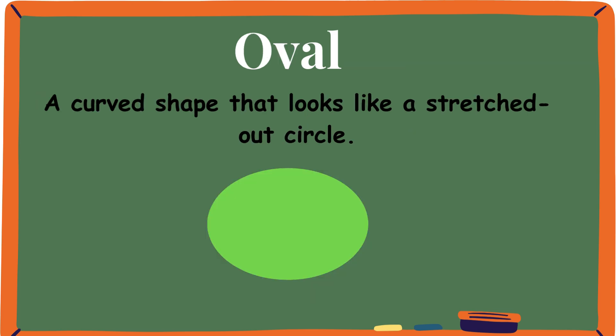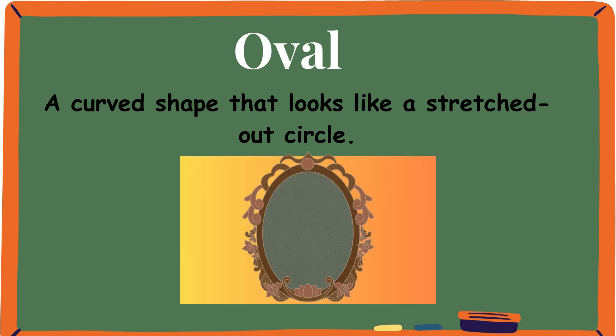Oval. An oval is a curved shape that looks like a stretched-out circle. So imagine a circle and you stretch it out. This mirror also has an oval-like face.